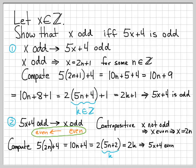We have shown that when x is even, 5x plus 4 is even. That is logically equivalent to 5x plus 4 being odd implying x is odd. We have established the other part of the if-and-only-if proof.